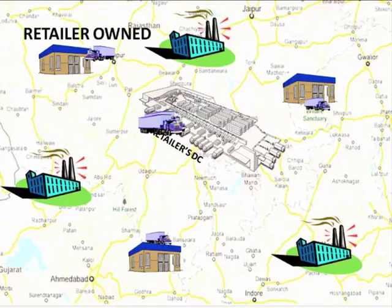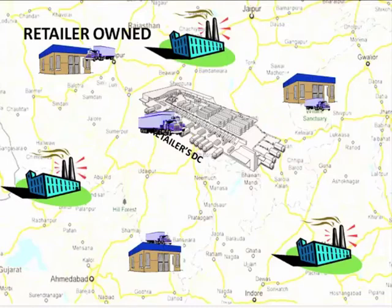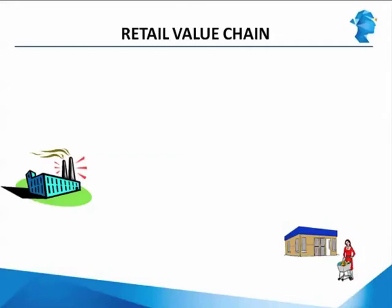Based on the demand forecast of the stores for the coming days, the distribution center places the combined order for all the stores to the manufacturer, and as and when it receives orders from the store, it ships them to the store. In the retail module on distribution, we will be deep diving into when it makes sense for a retailer to build its own distribution chain and what the advantages of this chain are over using the manufacturer's distribution chain.